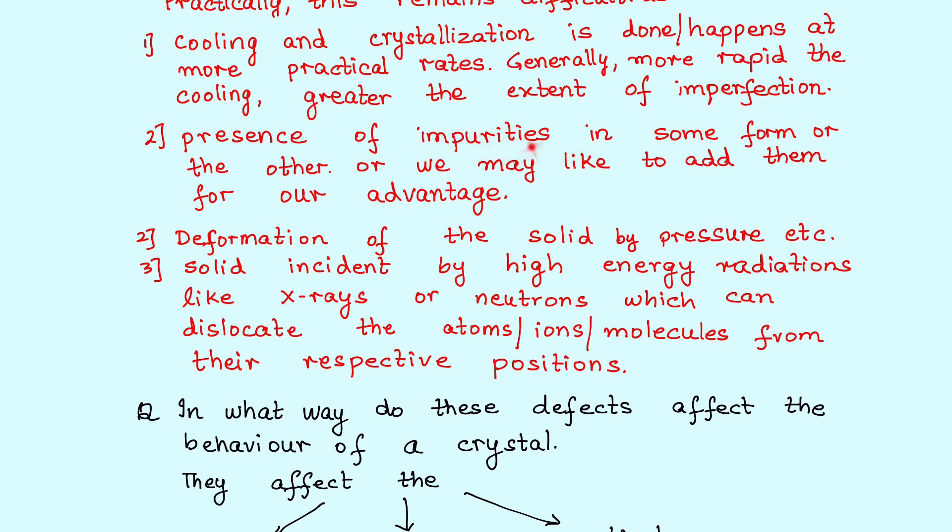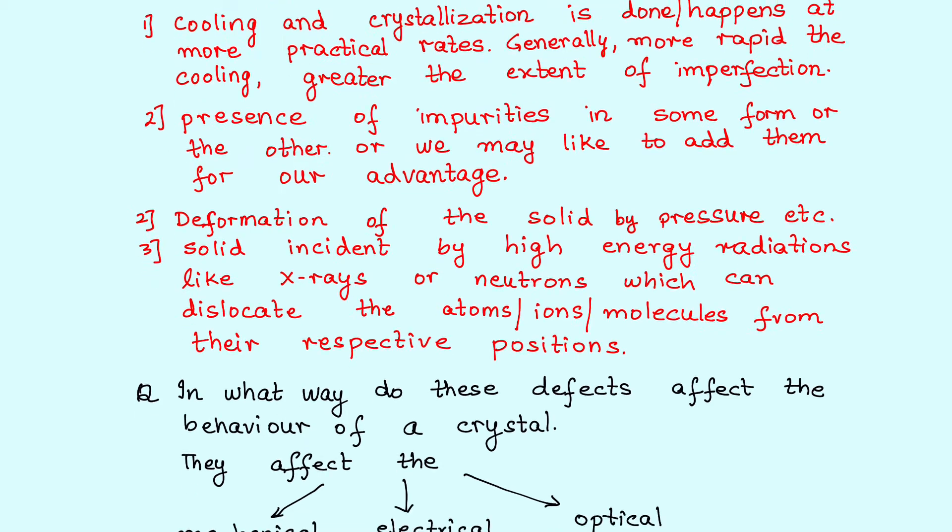Sometimes we do add impurities: stainless steel, many other forms of steel, surgical steel. So you add nickel, chromium, carbon. These kind of elements are specially added to iron in order to improve its properties. So we do introduce impurities in the crystal while it is being formed from its solution.